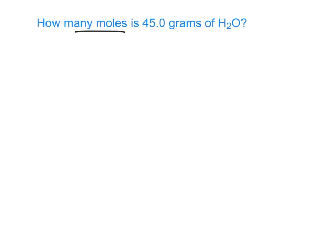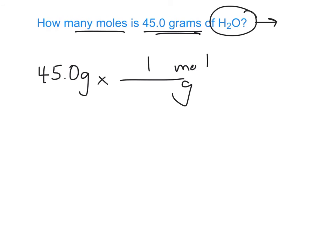How many moles is 45 grams of H2O? So I start with my 45 grams, and I'm going to change grams to moles. And now one mole weighs whatever the molar mass of that is: 2 times 1.01 plus 16 is 18.02 grams per mole. So there's 18.02 grams for every one mole. So if I divide that out, I get 2.50 moles. And that's how we can use the molar mass in some problems.